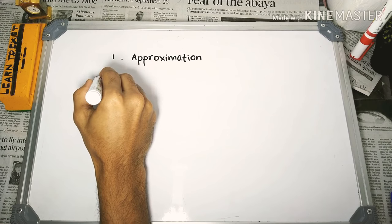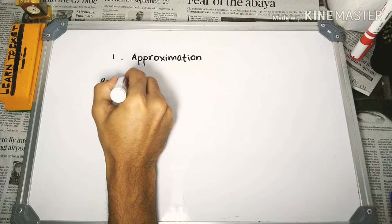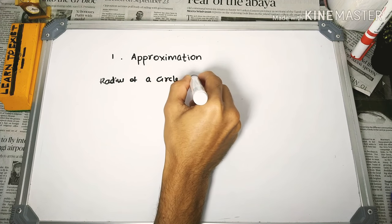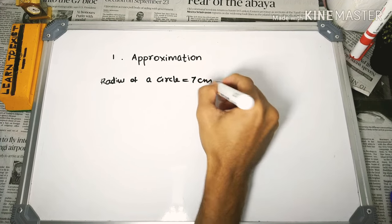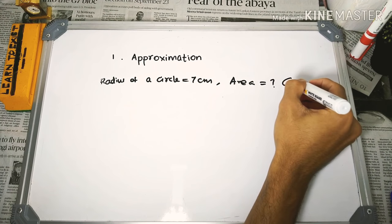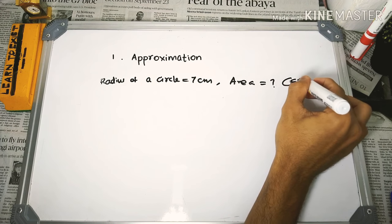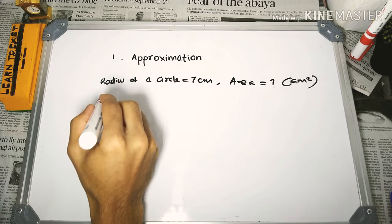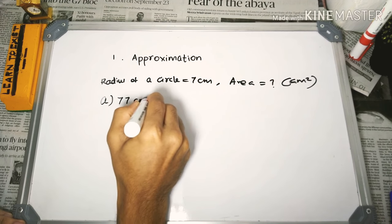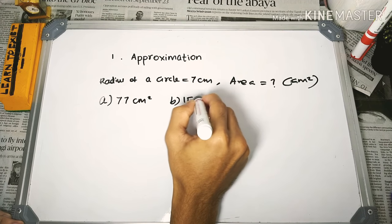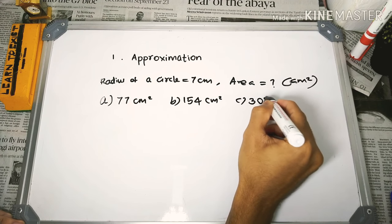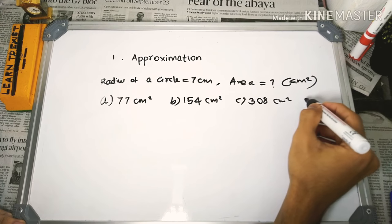The radius of a circle is 7 cm. The area of the circle is equal to what? The answer options are: 77 cm², 154 cm², 308, and 616.